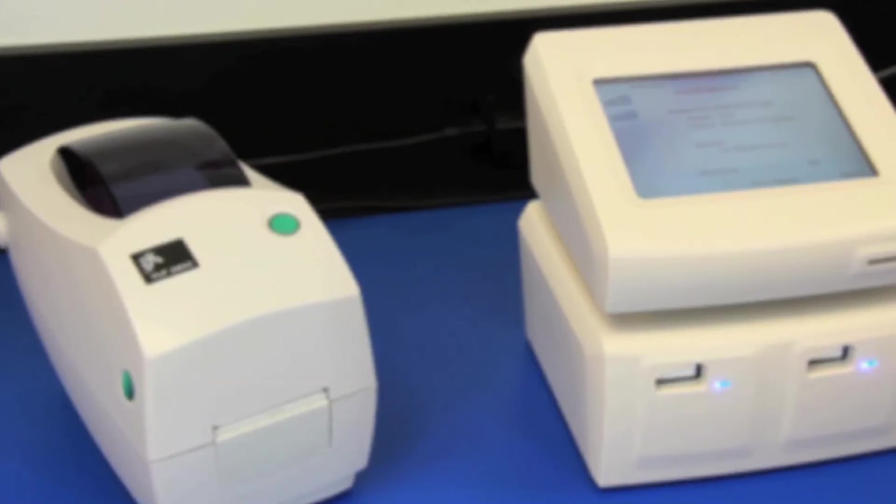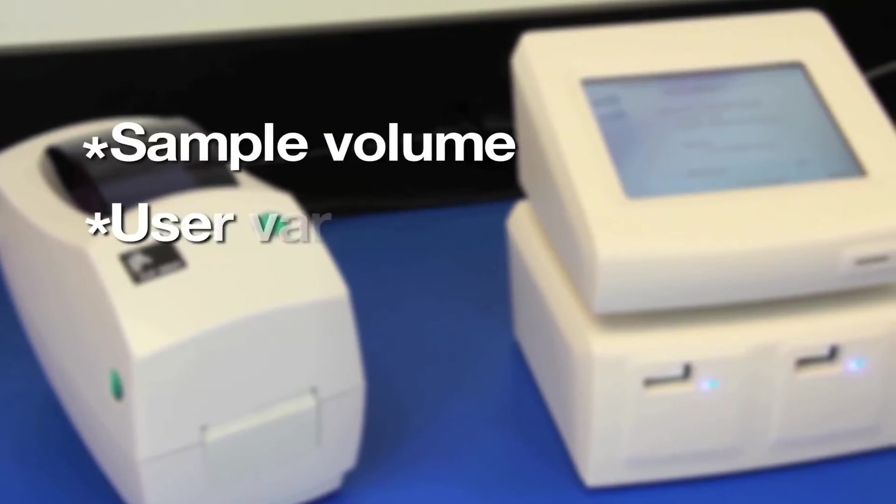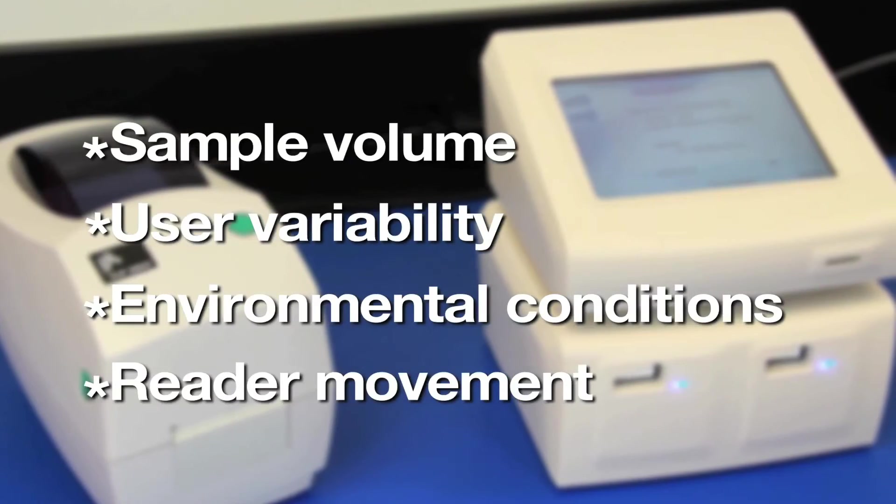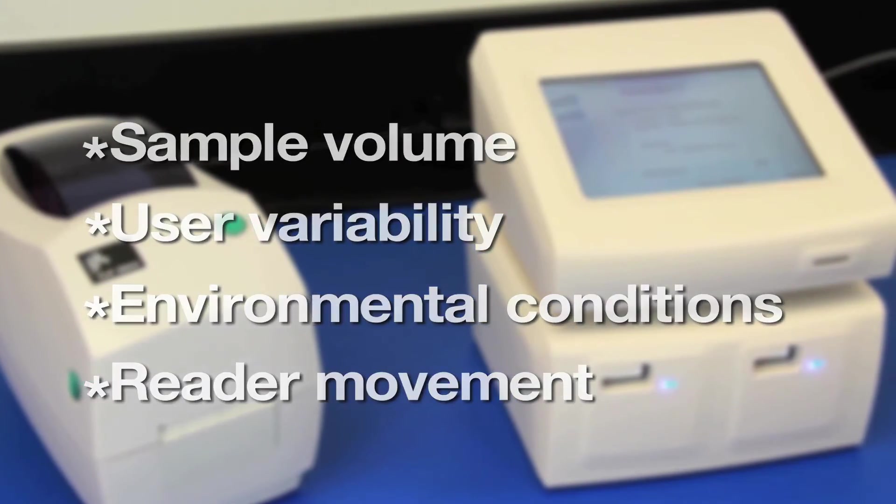The ramp ratio corrects for sources of variability, such as sample volume, user variability, environmental conditions, and reader movement, providing enhanced precision and accuracy to your test results.